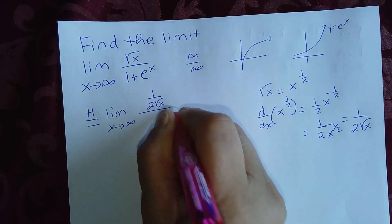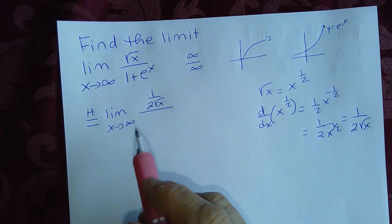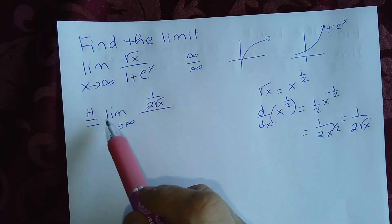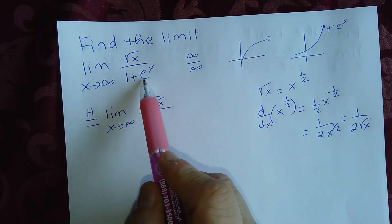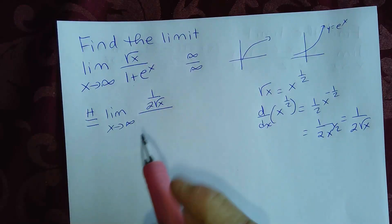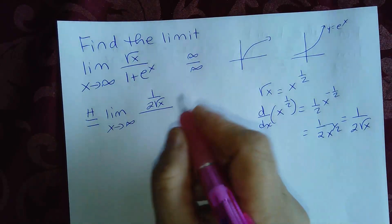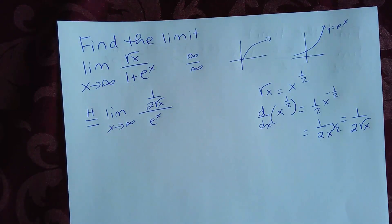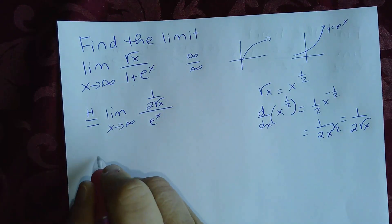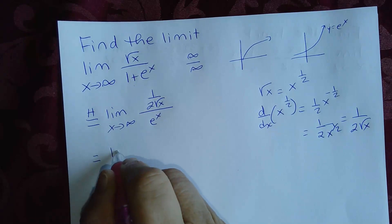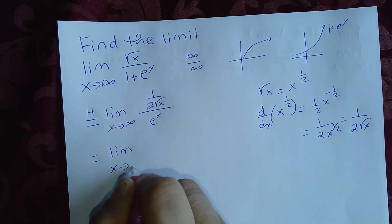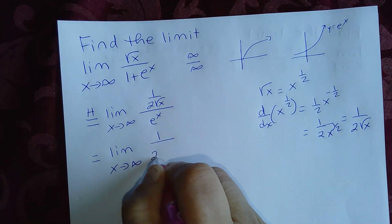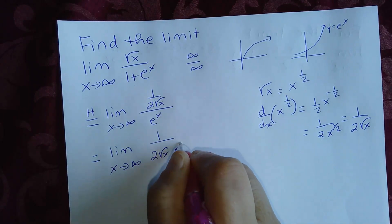Divided by the derivative of the denominator: the derivative of 1 is zero, plus the derivative of e to the x, which is e to the x. Rewriting this, we get the limit as x approaches infinity of one over two square root of x times e to the x.